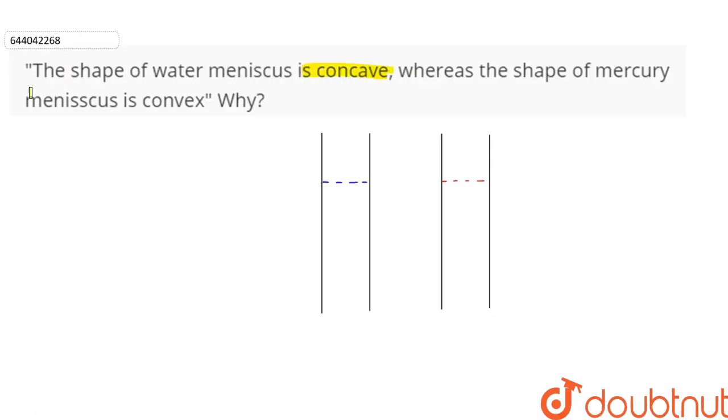concave, whereas the shape of mercury meniscus is convex. Why? The concavity or convexity happens because of difference in adhesive and cohesive force.